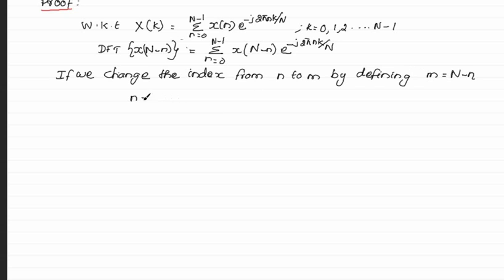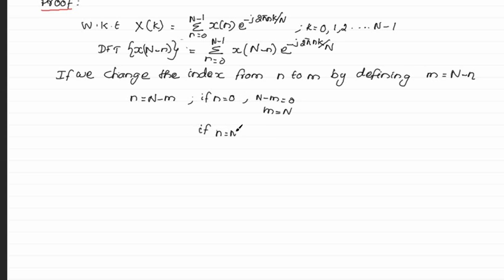Therefore n is equal to N minus m. For the lower limit, when n equals 0, N minus m equals 0, so m equals N. For the upper limit, when n equals N minus 1, substituting that value gives m equal to 1.